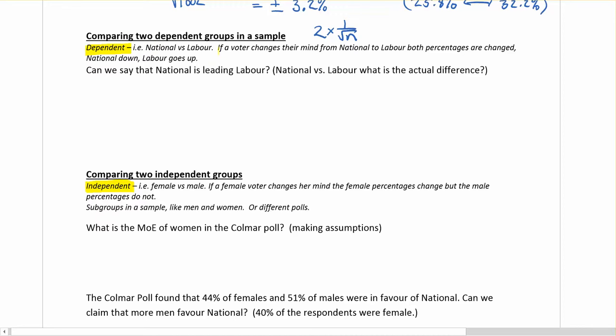In this case with national versus labour, if a national voter changes their mind and goes to labour, it does actually have an effect. So they're what we call dependent events. Our rule for these ones is going to be two times the margin of error.